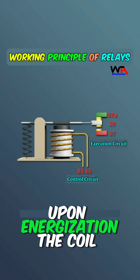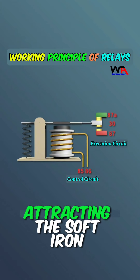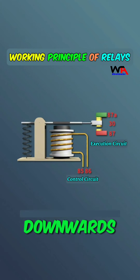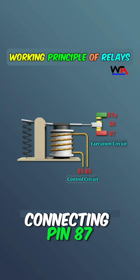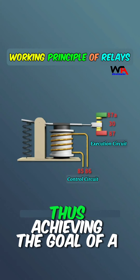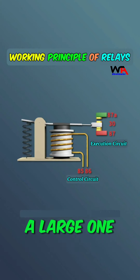Upon energization, the coil generates a magnetic field, attracting the soft iron downwards, disconnecting pins 30 and 87A, and connecting pin 87, thus achieving the goal of a small current controlling a large one.